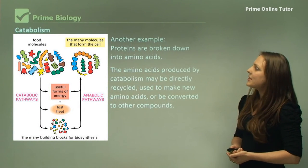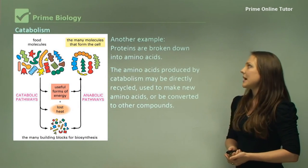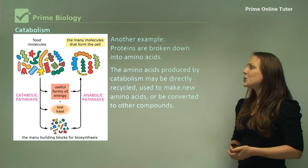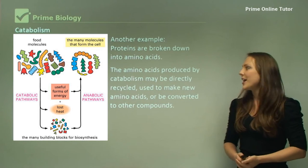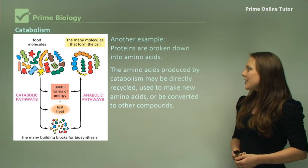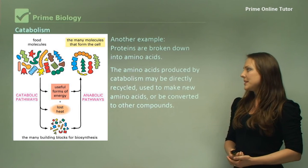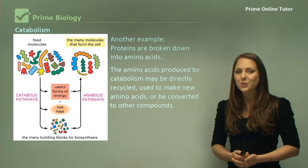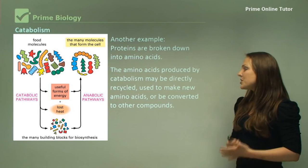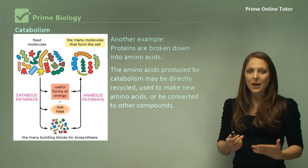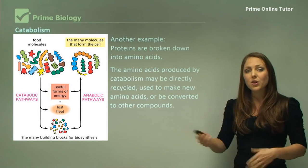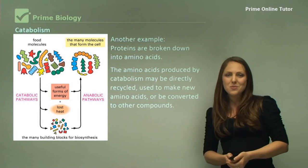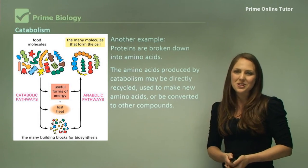Another example of catabolism: proteins are broken down into amino acids. The amino acids produced by catabolism may be directly recycled, used to make new amino acids, or converted to other compounds such as other proteins that your body can use.